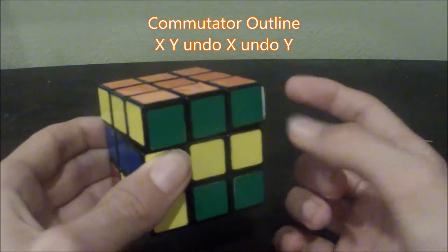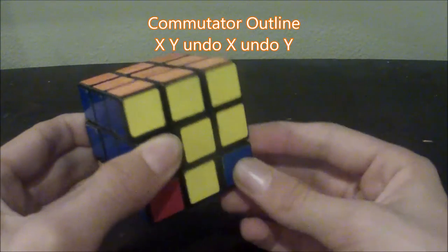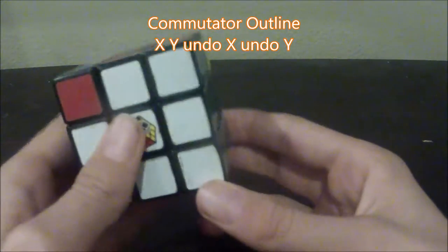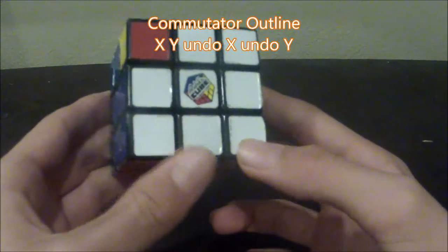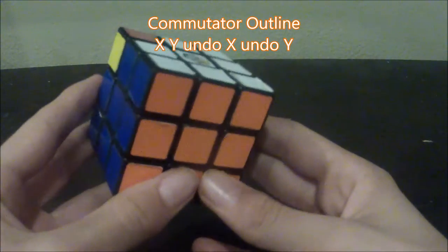Undo X, so undo our U, and undo Y, which is our bottom. And now I'm just going to explain a little bit about the nature of commutators, why you'd want to use them, and then I'll show you exactly how to do one.